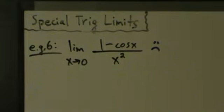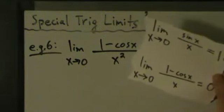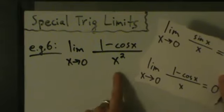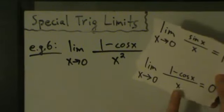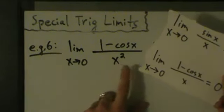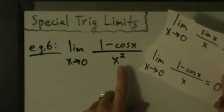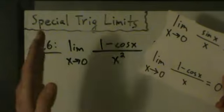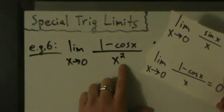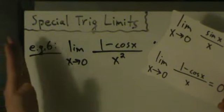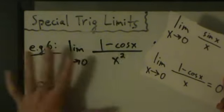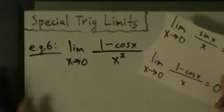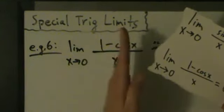So we go to our special trig limits, and we see this kind of looks like the standard form, but instead of x in the denominator we have x squared, so that's no good. We can't just pull an x out — the limit depends on x, so we can't pull x outside of the limit, because that changes everything. You can never do that. If the limit depends on x, then x has to stay inside the limit.